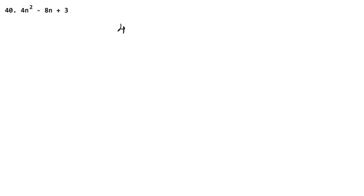In this question, we have to factorize 4n squared minus 8n plus 3. We multiply the first and last coefficients: 4 times 3 gives us 12n squared. Now we need two factors of 12 that will give us minus 8n in the middle.